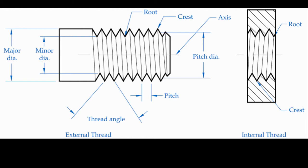The minor diameter is the smallest diameter of a thread, measured root to root across the diameter of the cylinder. The pitch diameter is an imaginary diameter where the width of the thread ridge is equal to the width of the groove between ridges. This is important in designing fits between threaded parts. The pitch diameter is imaginary, so it cannot be directly measured — we measure two things, find the middle, and that's our pitch diameter.